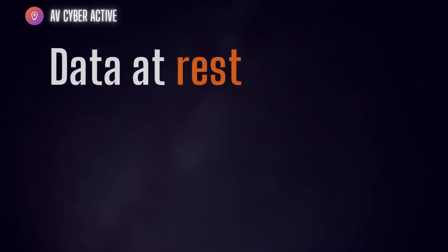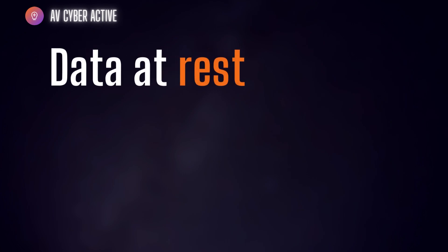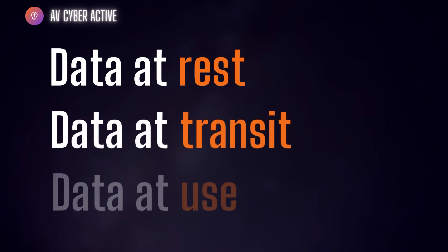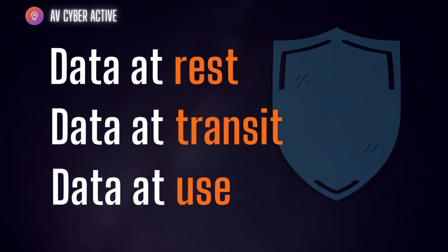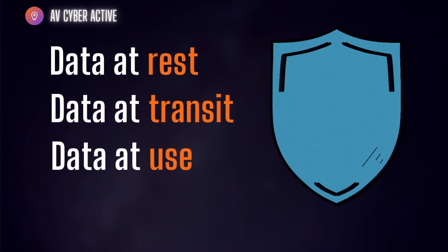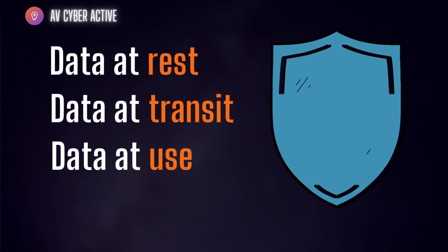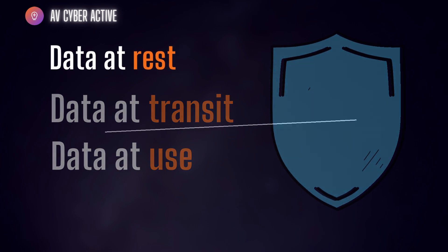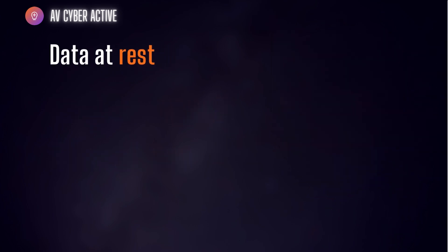Data has three states: data at rest, data in transit, and data in use. We'll also learn today how we can protect data at each state, beginning with the first one — data at rest.